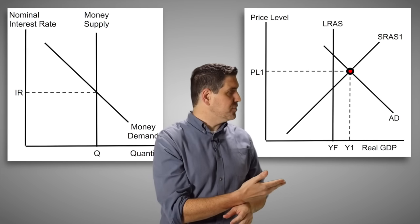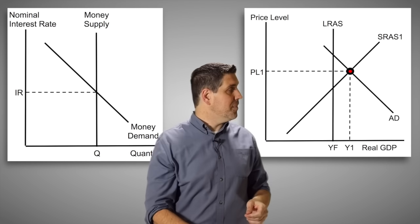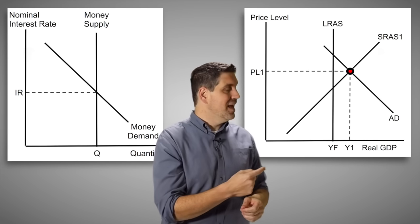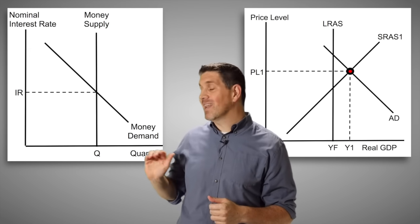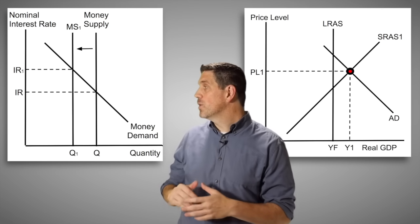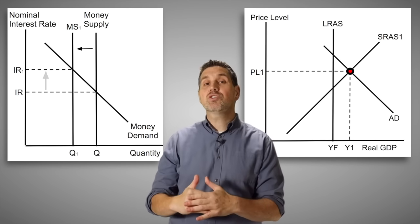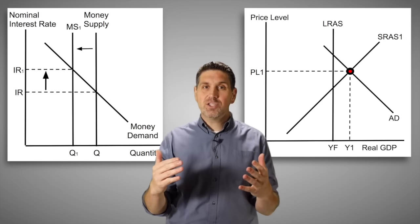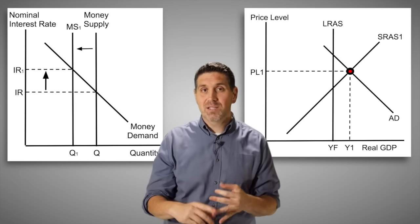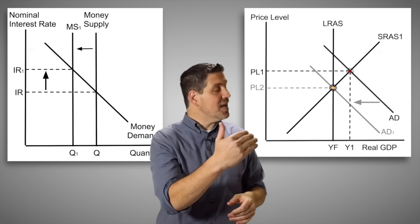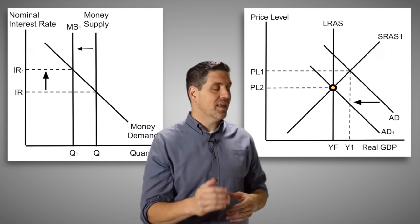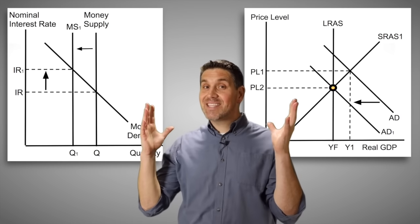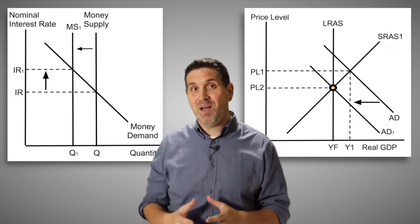Let's do that again, but assume we have a positive output gap — really low unemployment but high inflation. The central bank comes in and decreases the money supply, which will cause the interest rate to increase. Higher interest rates mean less borrowing and less spending by consumers and businesses. That would decrease aggregate demand, fight inflation, and put us back at full employment. This is the idea of monetary policy.